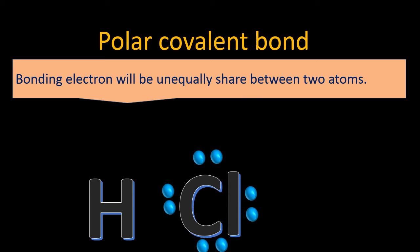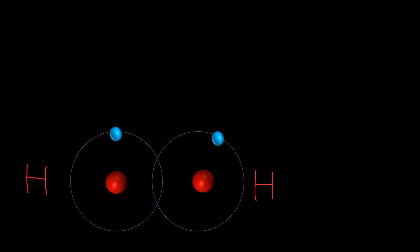Since chlorine is highly electronegative, it will attract the electron of hydrogen and complete its octet rule with eight electrons in its valence shell. Hydrogen will attract two electrons from chlorine and complete its duplet rule. Both elements have not given their electrons completely but share them according to need. Since the pair of electrons spends more time near chlorine, chlorine gets a negative charge and hydrogen gets a positive charge.